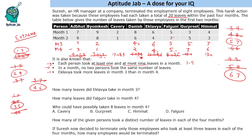Himmat is filled in. The last person remaining is Kaveri — it is 8 and 9. Since 8 is not used in month 3 and 9 is not used in month 4, we can have either value. So it could be 8 in month 3 and 9 in month 4, or 9 in month 3 and 8 in month 4.